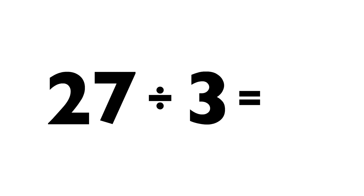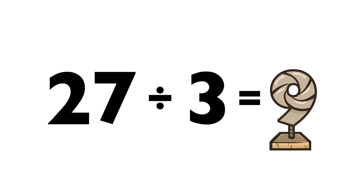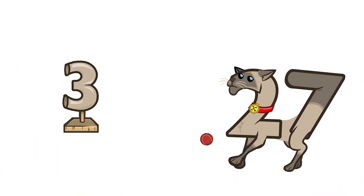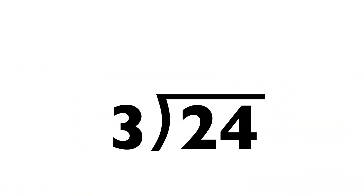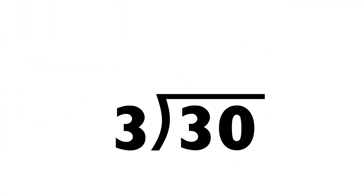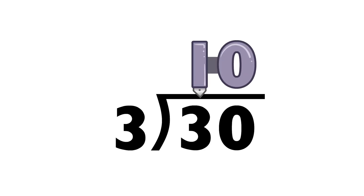Twenty-seven divided by three equals nine. Twenty-four divided by three equals eight. Thirty divided by three equals ten.